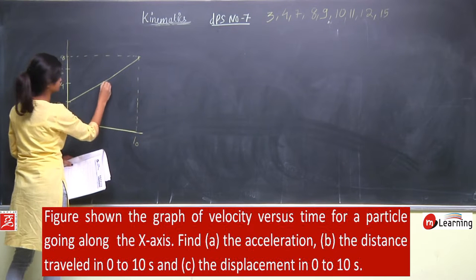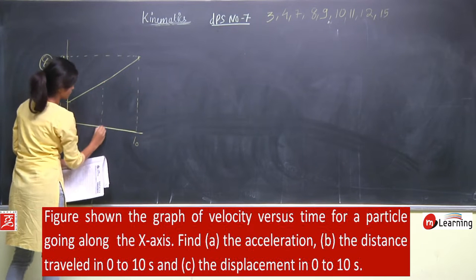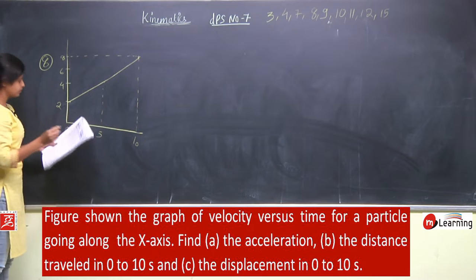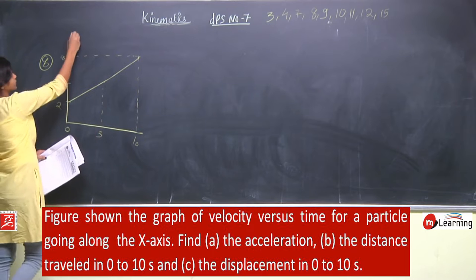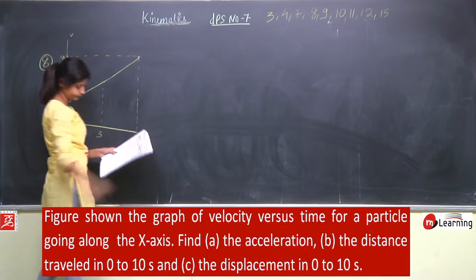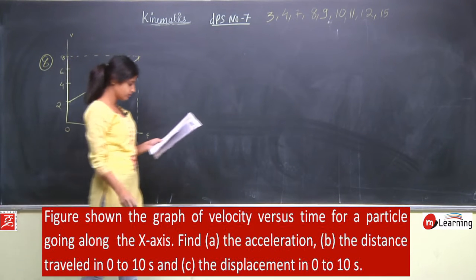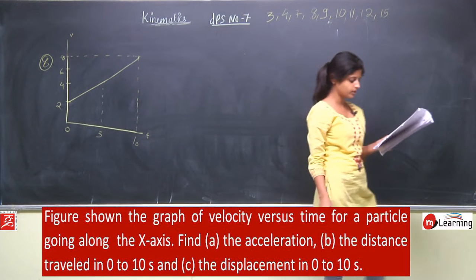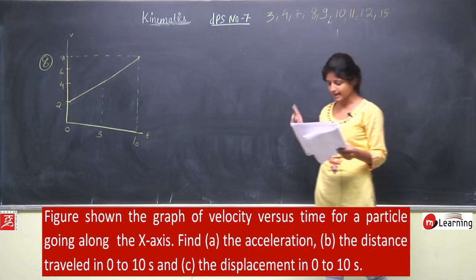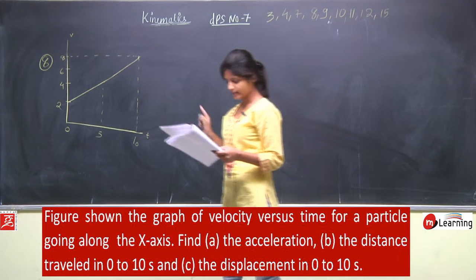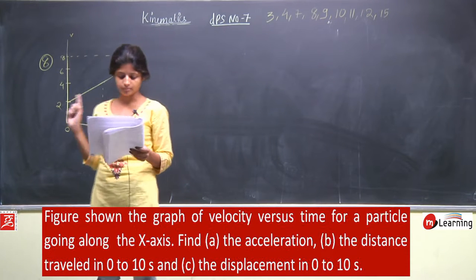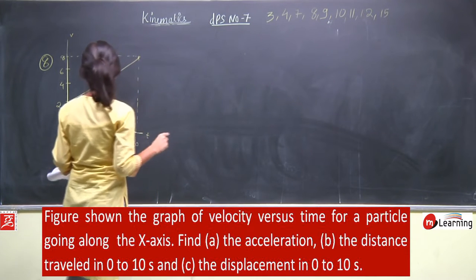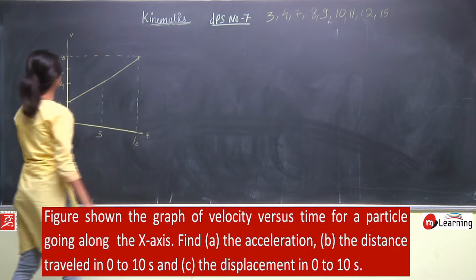Next is question number 8. This is a velocity versus time graph. The figure shows the graph of velocity versus time for a particle going along the x-axis. Find: (a) the acceleration, and (b) the distance travelled and the displacement from 0 to 10 seconds. Let's find the acceleration first.